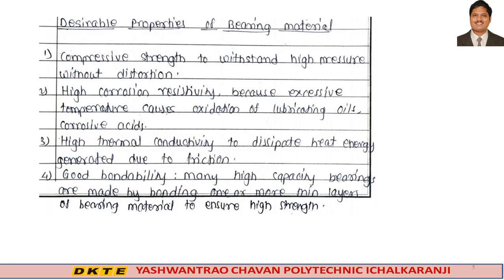Second is high corrosion resistivity. High corrosion resistivity is important because excess temperature causes oxidation of lubricating oil and produces corrosive acids, which requires the bearing material to resist corrosion.